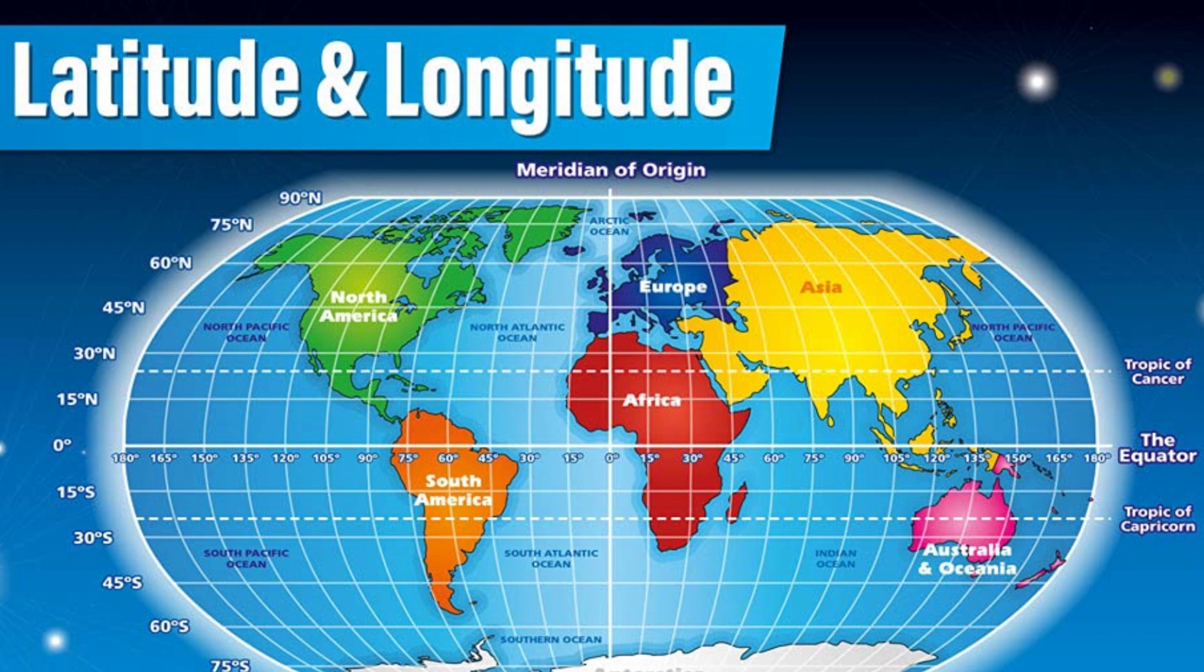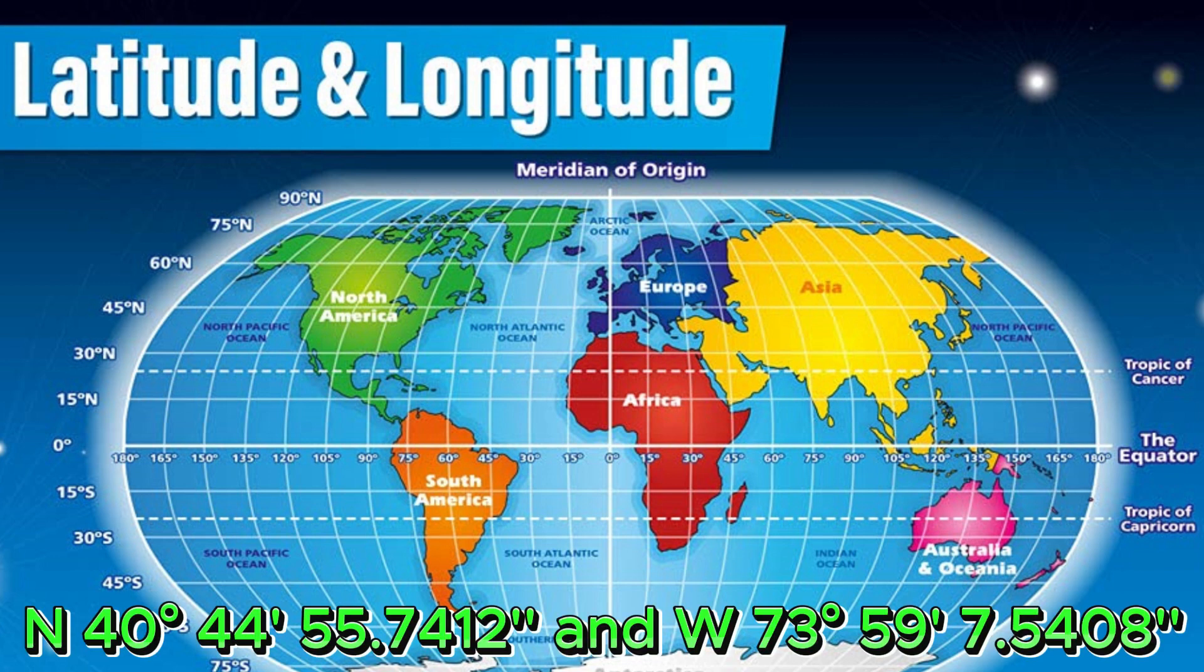GPS coordinates are expressed in different formats. Below are the coordinates for the Empire State Building in New York City: North 40 degrees 44 minutes 55.74 seconds, West 73 degrees 59 minutes 7.54 seconds.